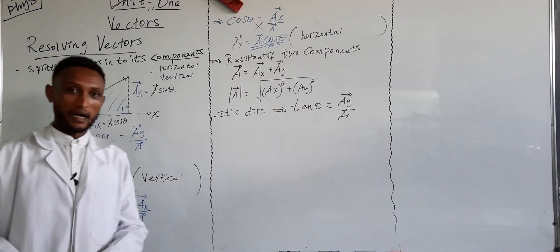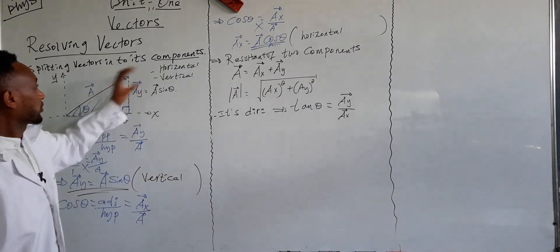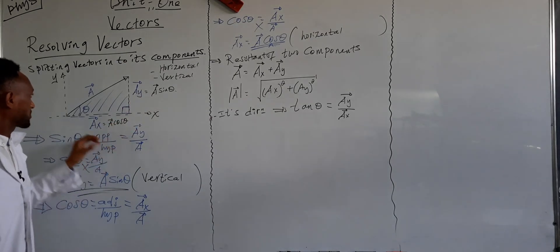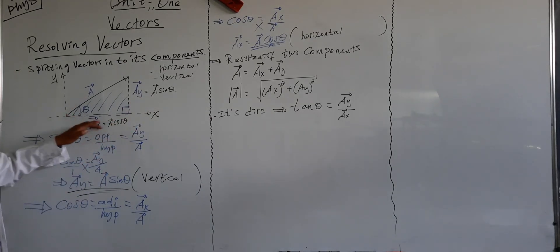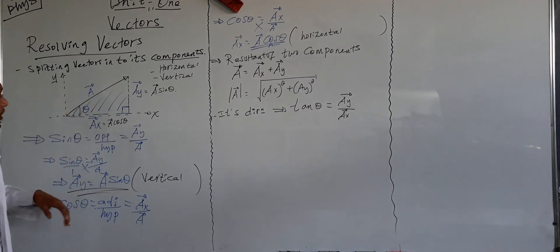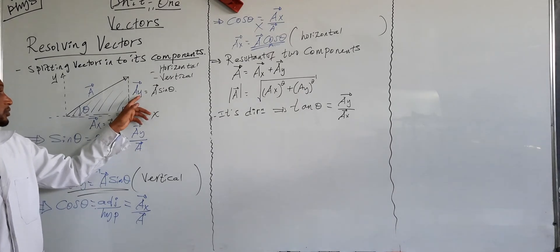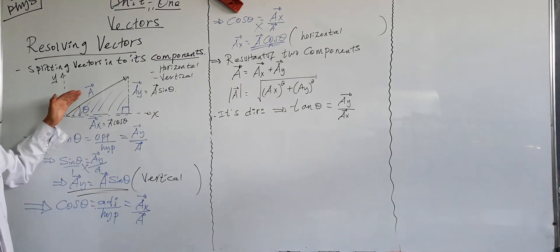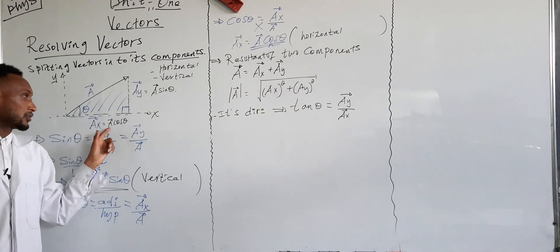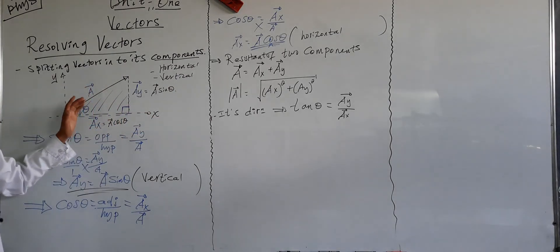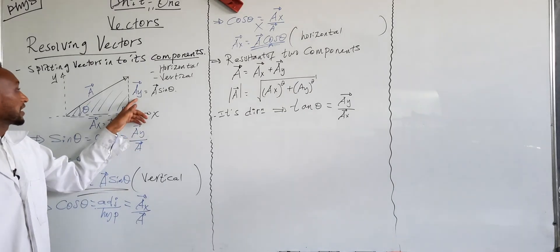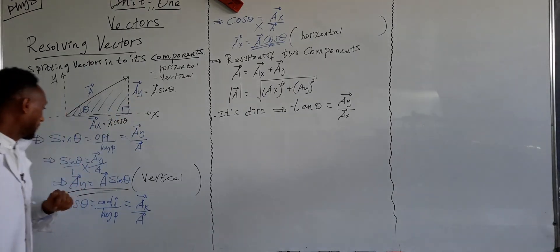Resolving a vector gives the angle projection vector with two components. The two components are the horizontal component and the vertical component. This is vector A with the x-coordinate angle, which is the horizontal component. This is the vertical component along the y-direction.